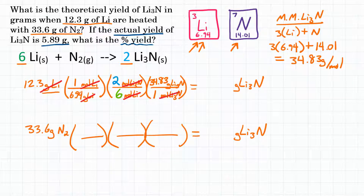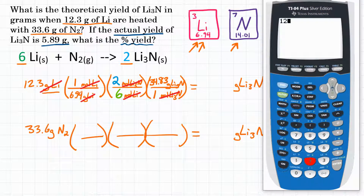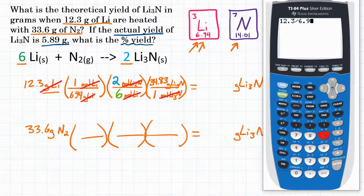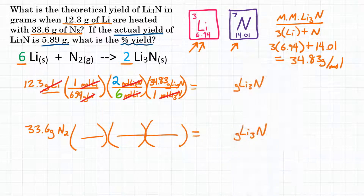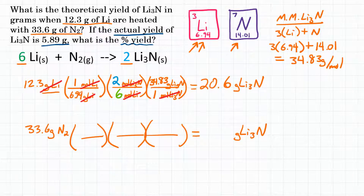Units of moles of lithium nitride cancel, and now we can solve using a calculator. Starting with 12.3, we divide by 6.94, multiply by 2, divide by 6, then multiply by 34.83. The calculator gives 20.5768, which rounds to 20.6 grams to three significant figures. That would be the yield if all 12.3 grams of lithium were to react — but we have to do the other stoichiometry problem to confirm.